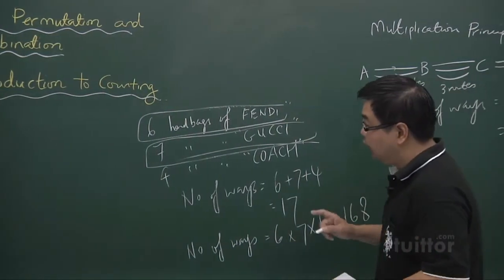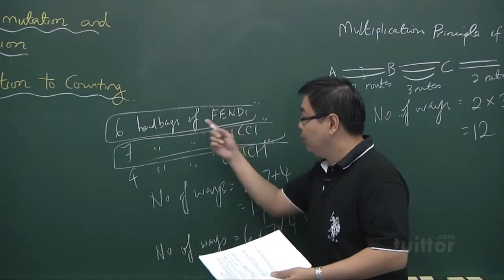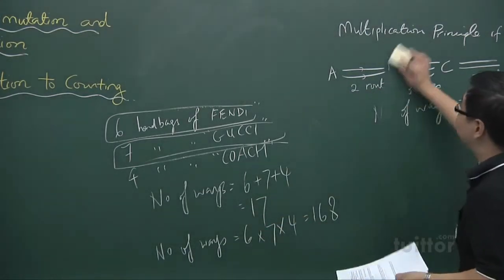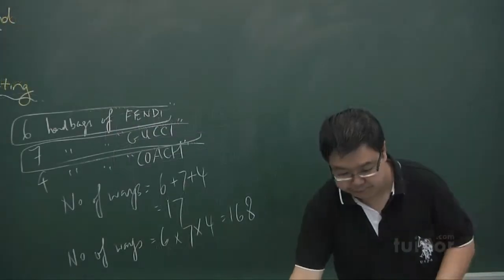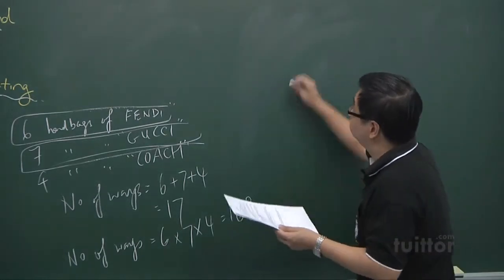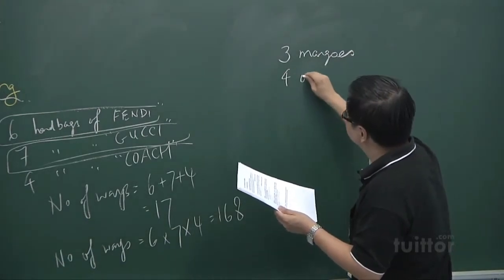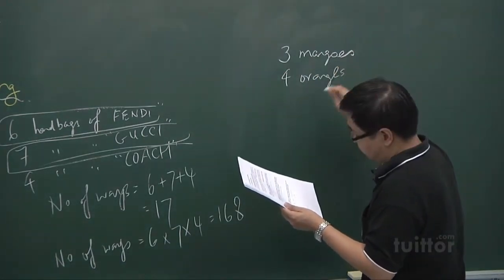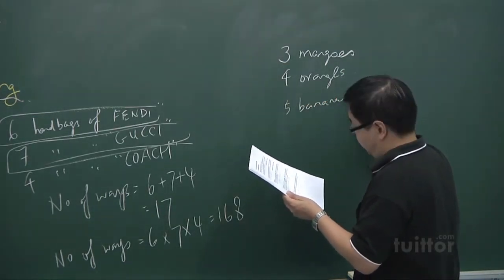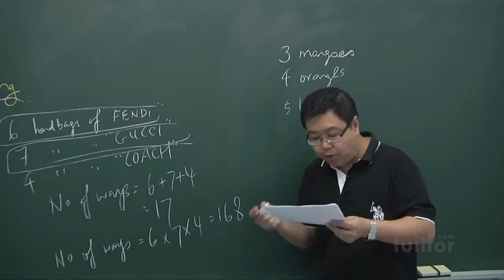You have to read the question carefully as to whether they're asking you to choose one handbag or one handbag from each brand. Now let's look at the third example. It says Gina has three mangoes, four oranges, and five bananas. In permutation and combination, non-living things like mangoes, oranges, and bananas are all considered identical within the same type of fruit — there is no distinction between one mango and another, unlike living things like people or animals.